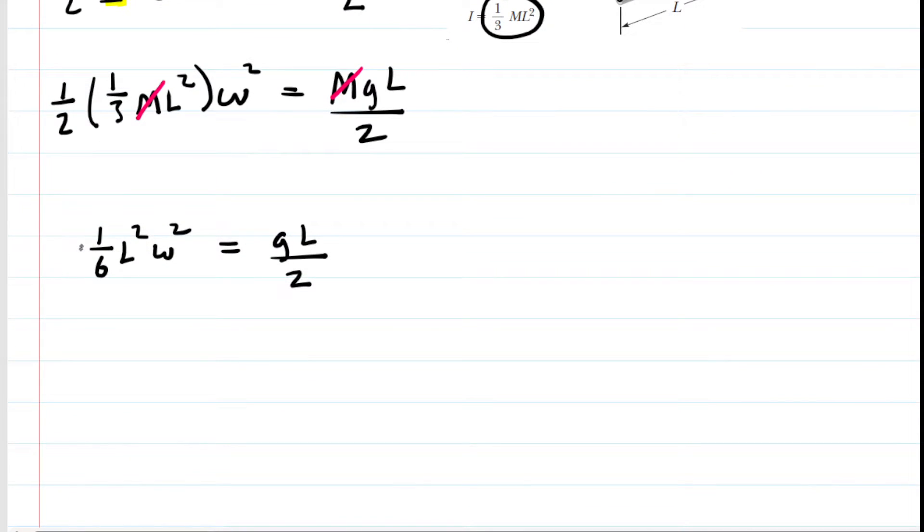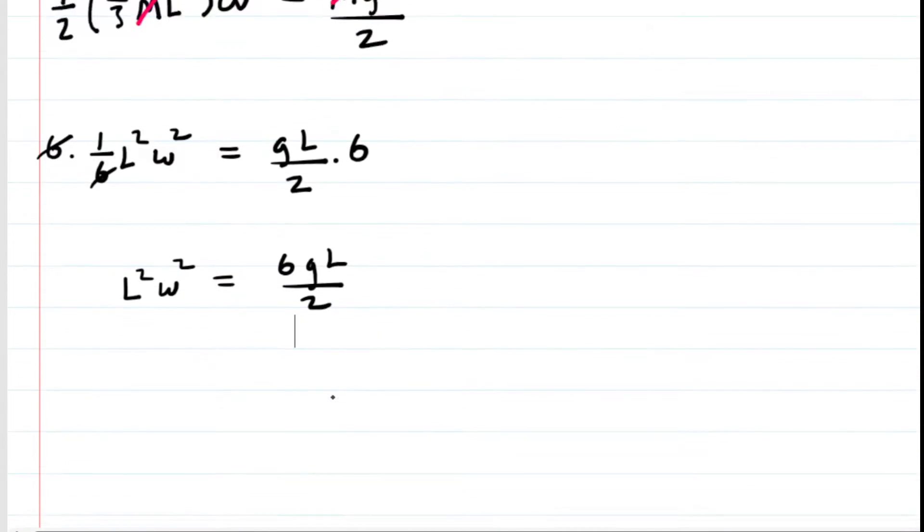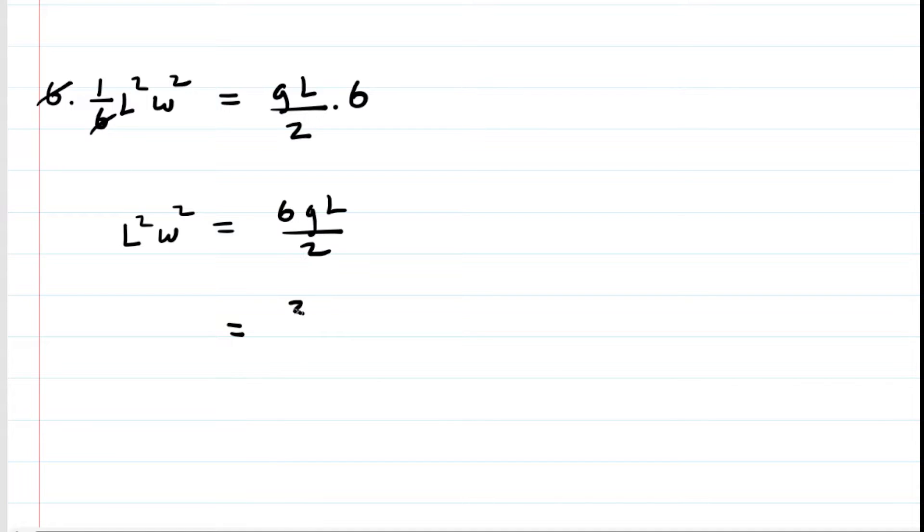Let's multiply both sides of the equation by six so that we can cancel the one sixth on the left-hand side. On the right-hand side, you have six divided by two. So we can write that as 3GL.